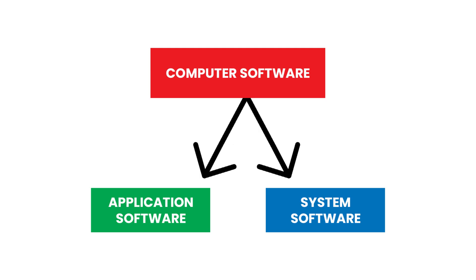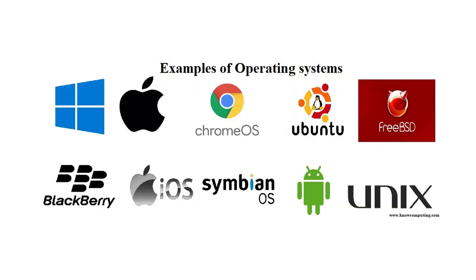Here are some key categories and types of computer software. Operating Systems (OS). Examples: Windows, macOS, Linux, Android, iOS.